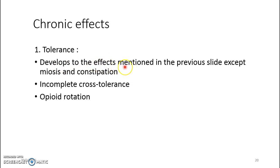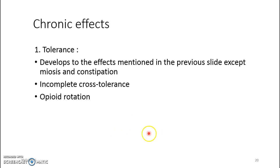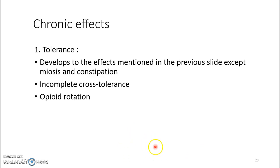There is incomplete cross-tolerance, meaning that if a patient becomes tolerant to one opioid such as morphine, they will likely develop tolerance to methadone or other opioids, but this cross-tolerance is not complete. You can consider switching to another opioid without going to the full equivalent high dose — this is the basis for opioid rotation.